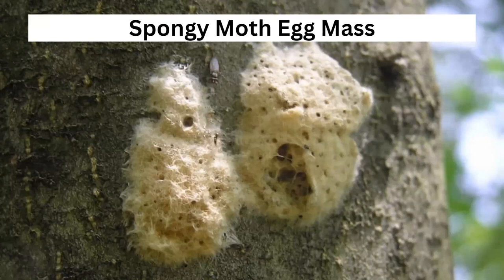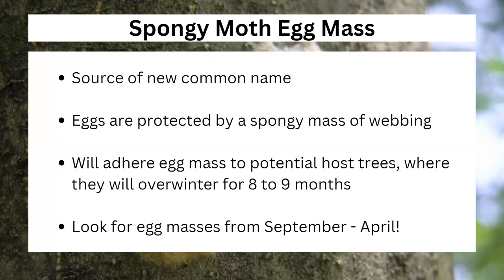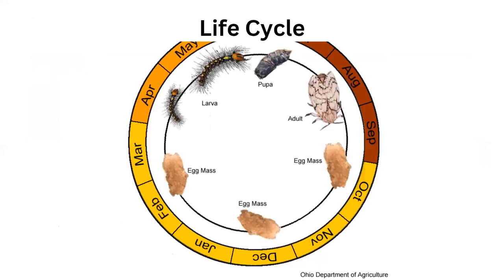Now the egg mass — this is where the Spongy Moth gets its name. Unlike a lot of caterpillar species, Spongy Moth caterpillars do not actually produce silk as they move around, as a lot of other species will. The adults, however, will produce a kind of silk material that they'll use to cover their egg masses. That spongy egg mass is going to be attached to the side of a tree and it's going to have that protective covering over it so it can overwinter on those trees for about eight to nine months. You're going to start looking for those egg masses from September to April, depending on how warm it is where you are.